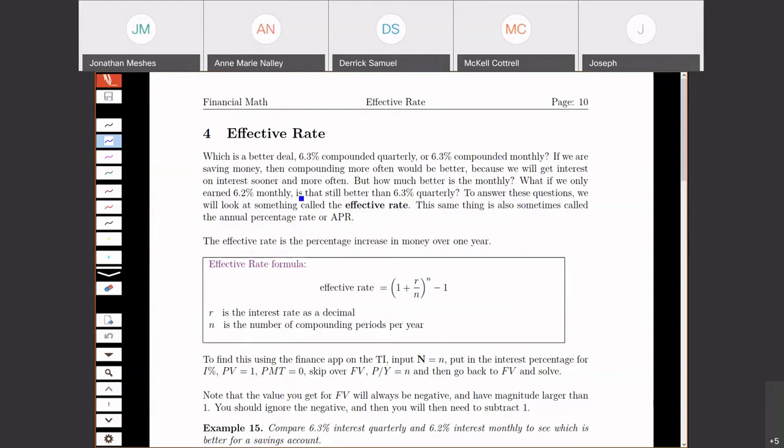But what if the compounded monthly has a slightly smaller rate? What's better: 6.2% monthly or 6.3% quarterly? Well, it's a little bit more complicated. The monthly is better than quarterly, but the 6.3% is better than the 6.2%. So we have to figure out which one wins out here, what's the balance. That's what effective rate is going to be for. This effective rate is going to give us a way to compare something like 6.2% monthly versus 6.3% quarterly to see which one is a better deal in our situation.